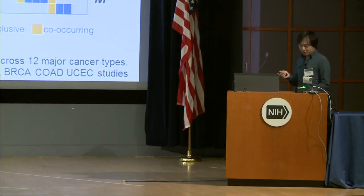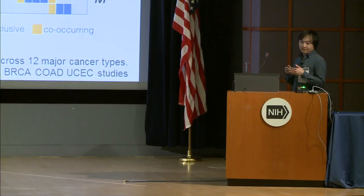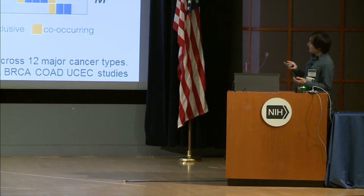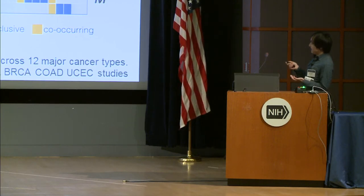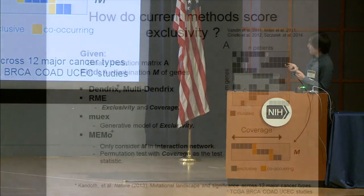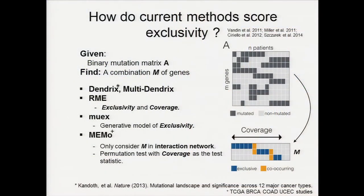How do current methods score exclusivity? Given the binary mutation matrix A, we try to find a combination M of genes by considering the exclusivity. Dendrix, MultiDendrix, and IME consider exclusivity and coverage simultaneously to score gene sets. MU-X uses a generative model to score exclusivity. In MIMO, they use a permutation test with coverage as the test statistic to score the gene set combination.